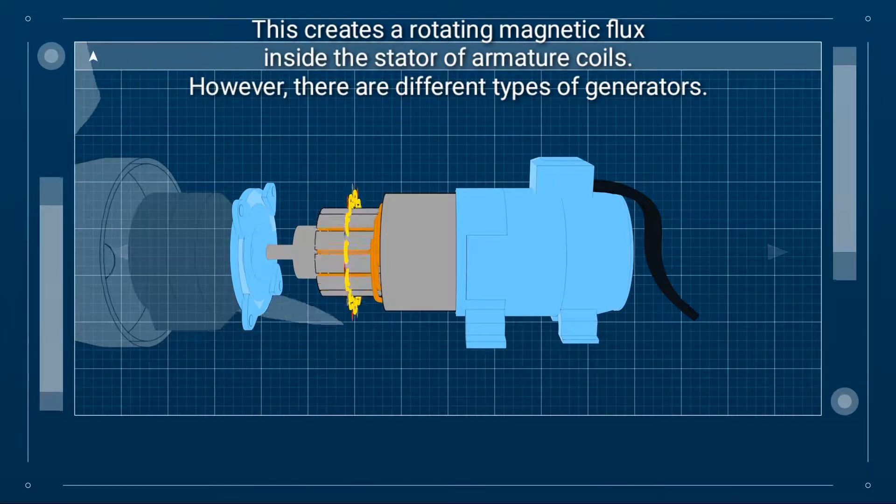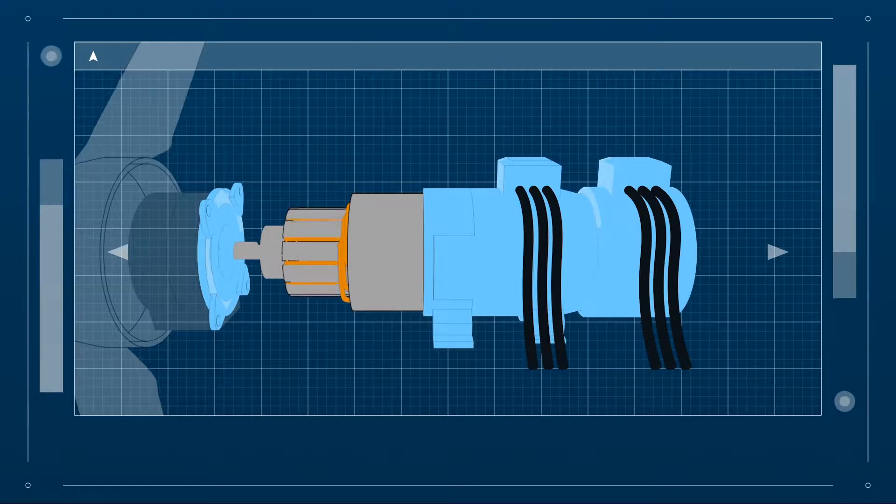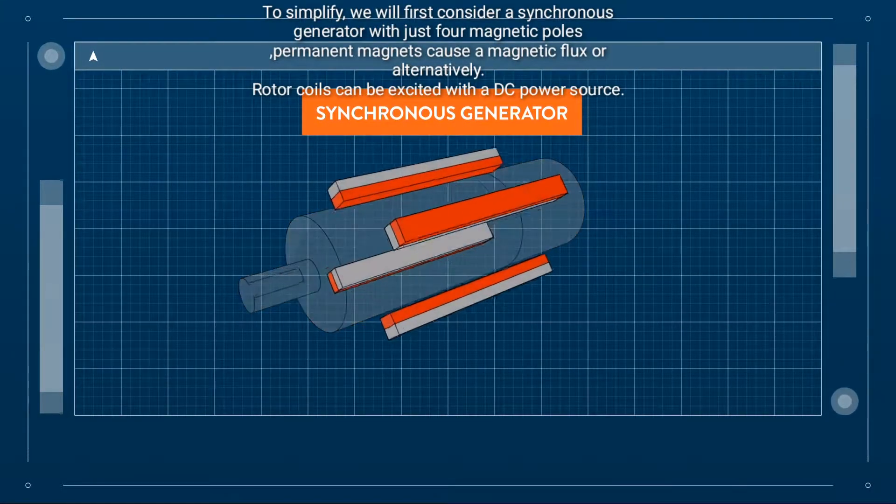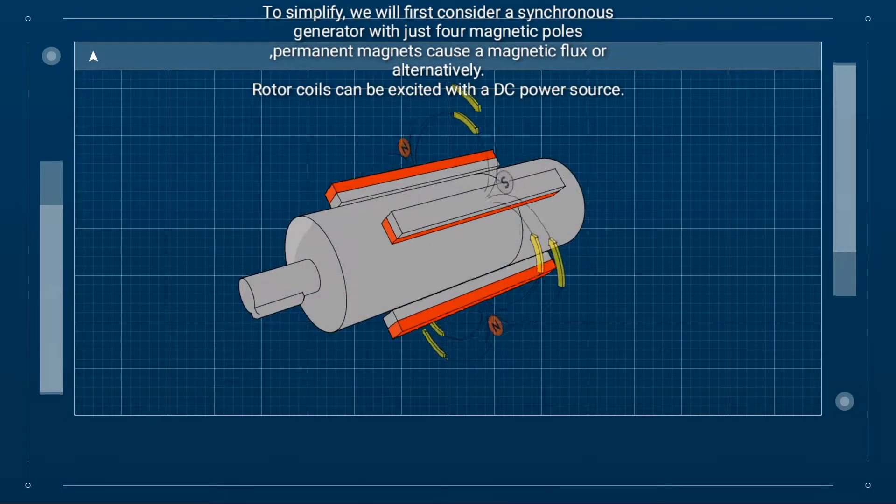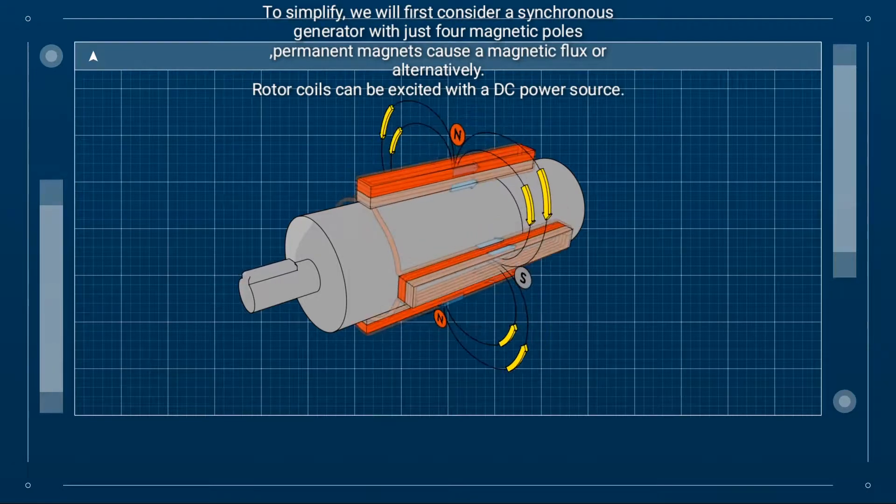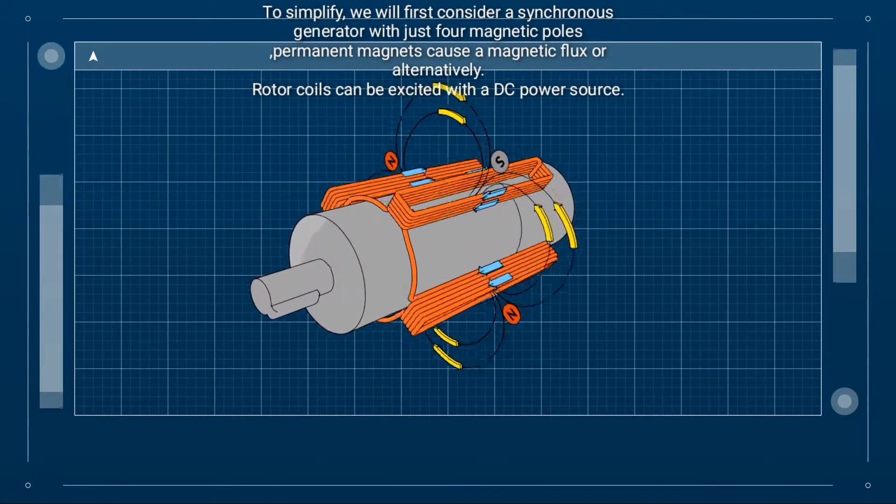However, there are different types of generators. To simplify, we will first consider a synchronous generator with just four magnetic poles. Permanent magnets cause a magnetic flux, or alternatively rotor coils can be excited with a DC power source.